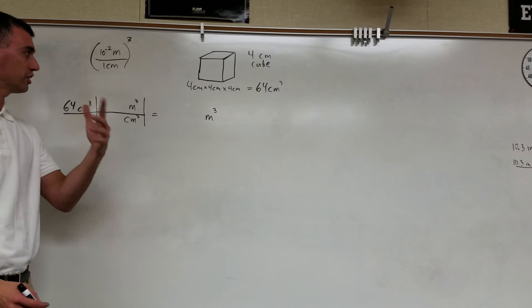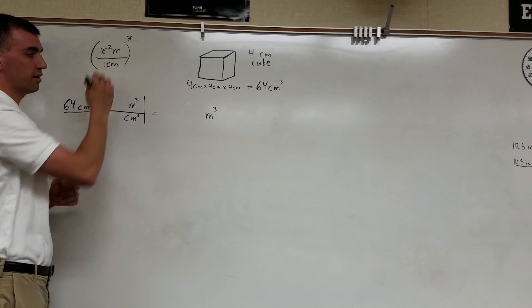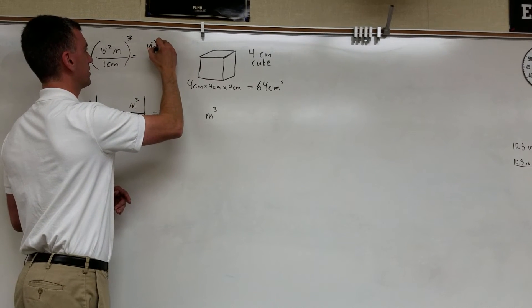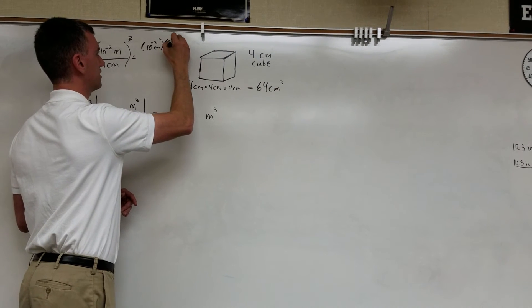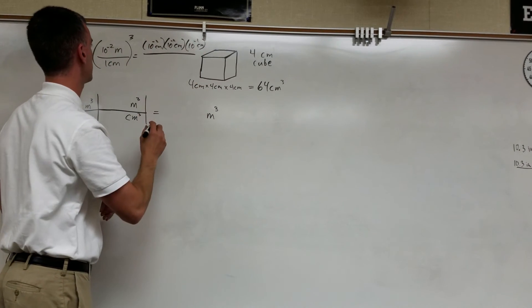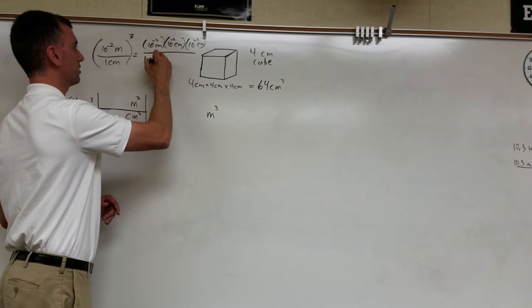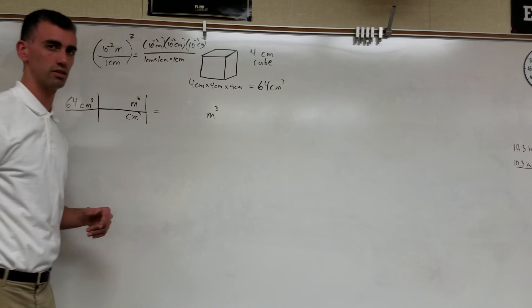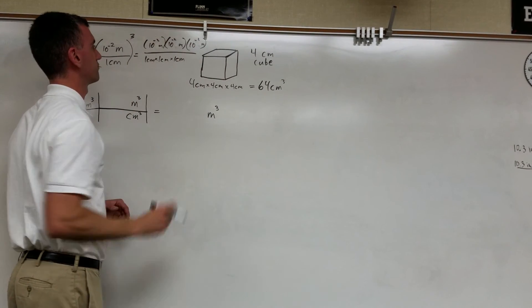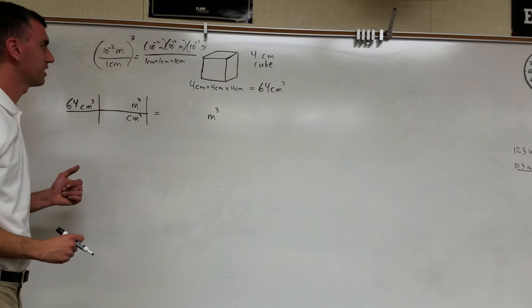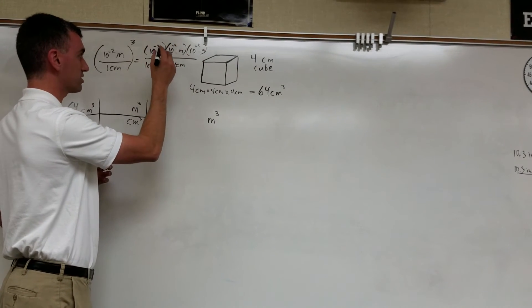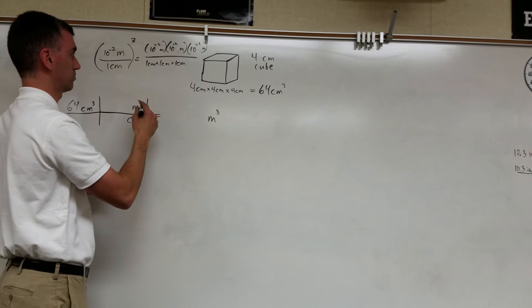In order to turn this into meters cubed, in order to turn this into centimeters cubed, we need to cube the entire relationship. That's why I put it in parentheses to show that this action of cubing is happening to the entire relationship. When I say cubed, that means this times itself three times. This is equal to 10 to the negative second meters times 10 to the negative second meters times 10 to the negative second meters on top, and on the bottom is 1 centimeter times 1 centimeter times 1 centimeter. Meters times meters times meters is cubic meters, centimeters times centimeters times centimeters is cubic centimeters, 1 times 1 times 1 is 1.